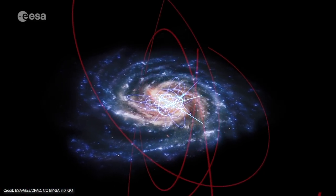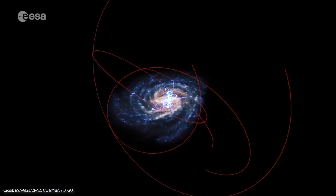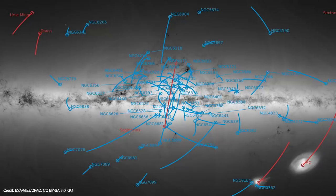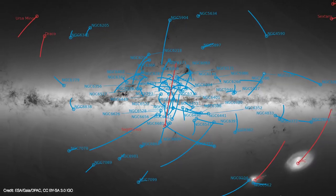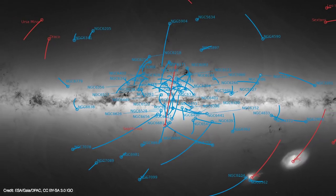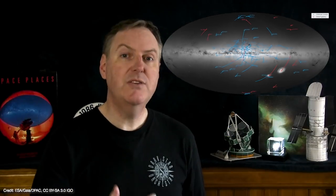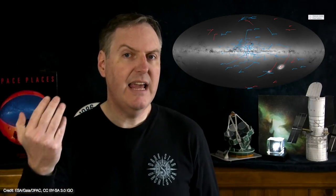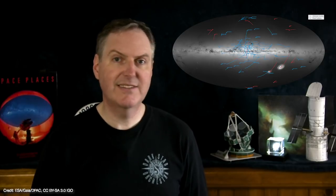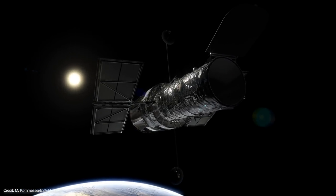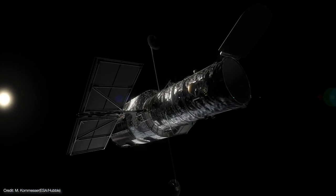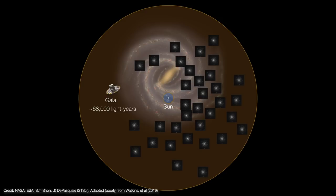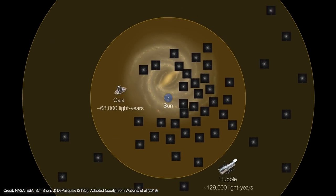The team selected 34 pristine halo clusters that weren't obscured by the disk or contaminated by metals. These objects measured by Gaia ranged in distance from 6,500 out to 68,000 light-years from the galactic center. Not only that, but the team used the Hubble Space Telescope to extend their survey even farther. Hubble has a smaller field of view than Gaia, but it can see much fainter and therefore more distant clusters.